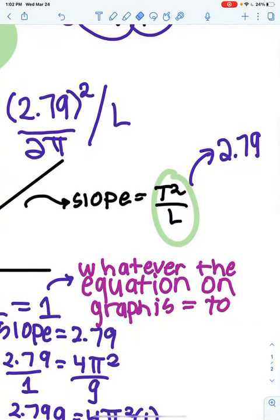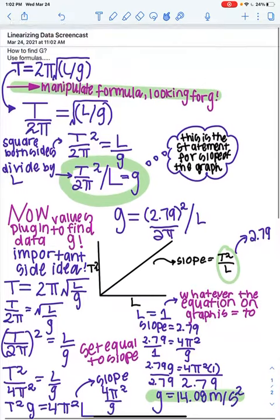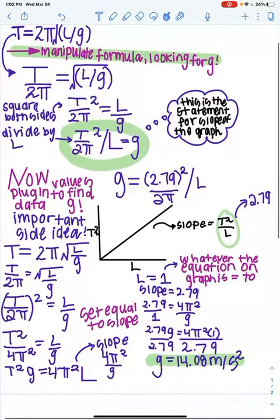And then knowing this information, we can manipulate it to find the slope. This is what the slope is equal to.